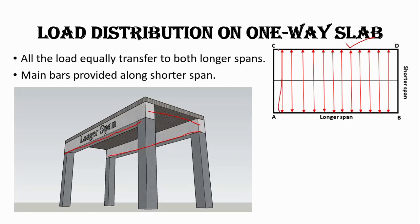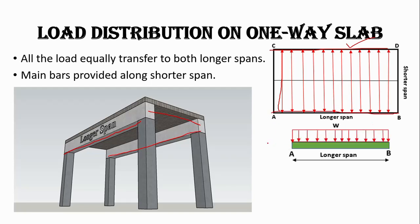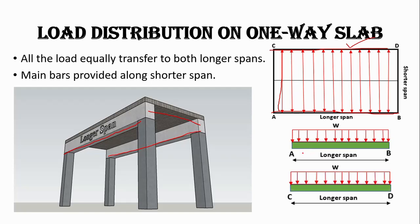The arrows in the picture show that the load is transferred to two beams AB and CD. If we note the load pattern on the beam, the load will be a UDL (uniformly distributed load) on these two longer span beams AB and CD. If you want to know how to calculate UDL, the link is in the description.